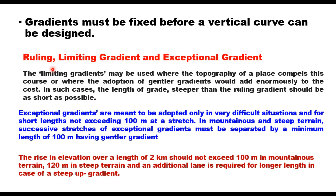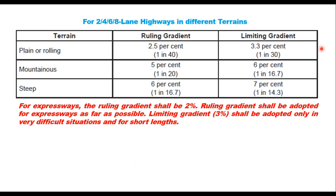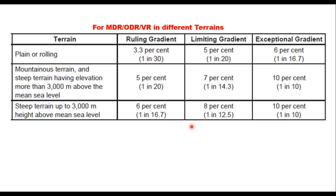In mountainous and steep terrain, successive stretches of exceptional gradients must be separated by a minimum length of 100 meters having a gentler gradient, because the rolling gradient is defined based on the power of the vehicle and any gradient steeper than the rolling gradient will adversely affect vehicle speed. The rise in elevation over a length of two kilometers should not exceed 100 meters in mountainous terrain and 120 meters in steep terrain. IRC 73 suggests ruling and limiting gradients for national and state highways depending on terrain: for plain or rolling terrain, the ruling gradient is 1 in 40 (2.5%), limiting gradient 3.3%. For expressways, the ruling gradient shall be 2% and the limiting gradient 3%.